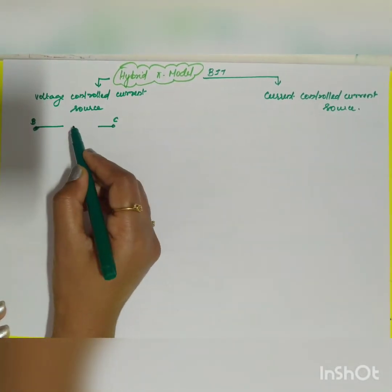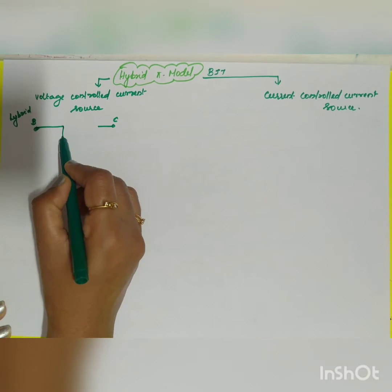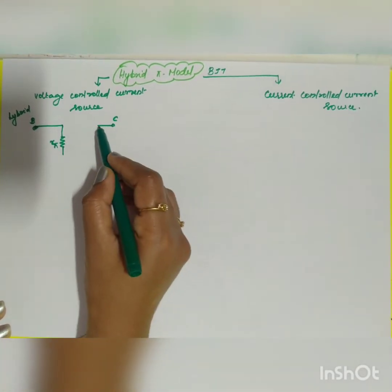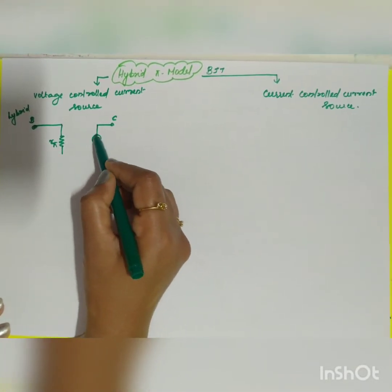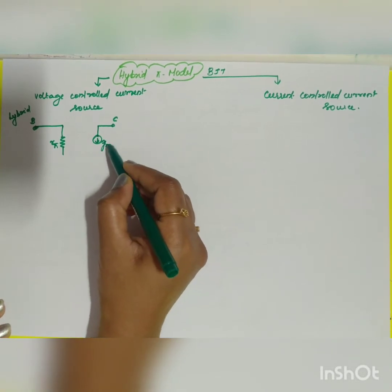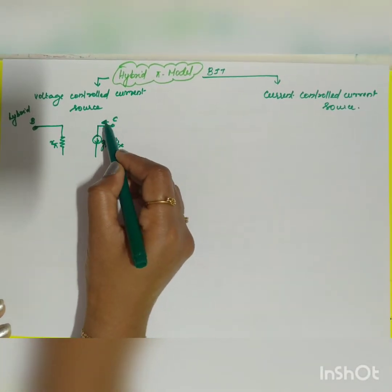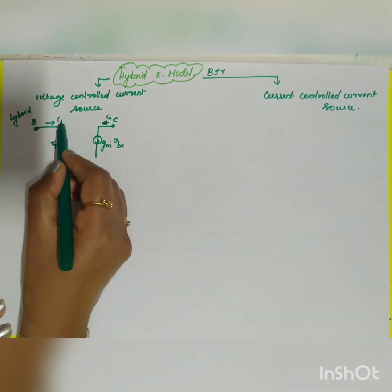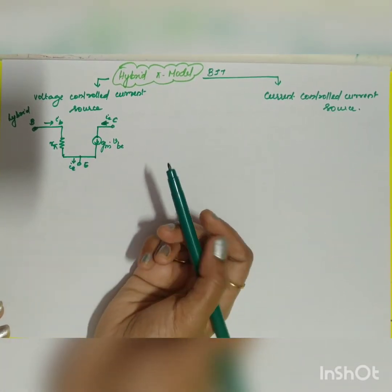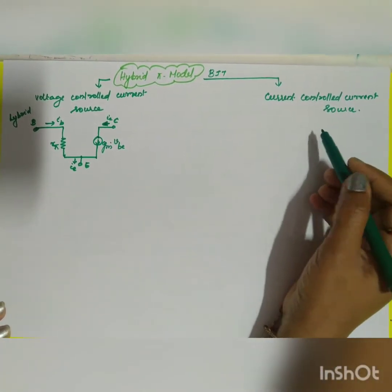This is the hybrid pi model of the voltage controlled current source. On the input side, you have the base resistor r_pi. On the output side, you have a current source — a voltage controlled current source given by gm×v_be, which represents the collector current ic. The base current ib flows at the input, and the common terminal is the emitter, with emitter current ie.